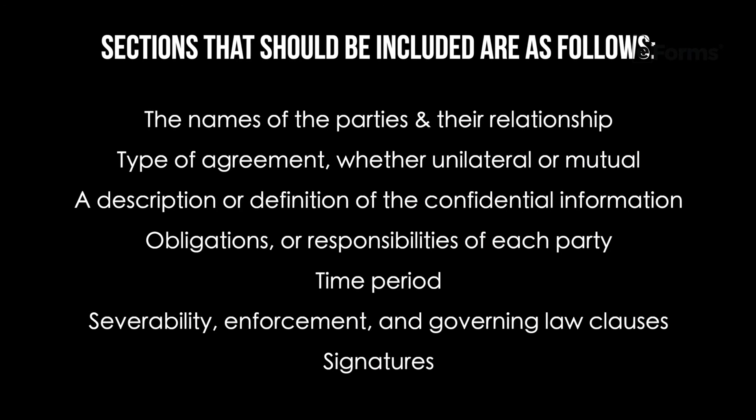What should the agreement include? At a minimum, sections that should be included are as follows: the names of the parties and their relationship, type of agreement whether it's unilateral or mutual, a description or definition of the confidential information, obligations or responsibilities of each party, time period, severability, enforcement and governing law clauses, and signatures.